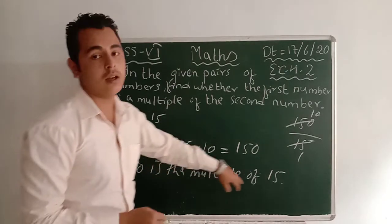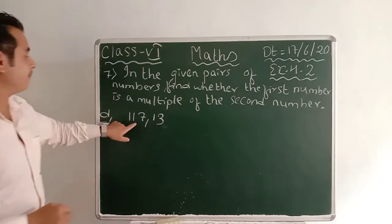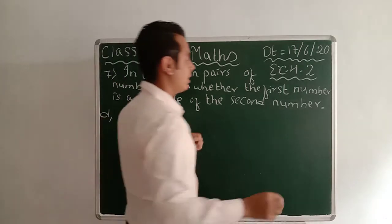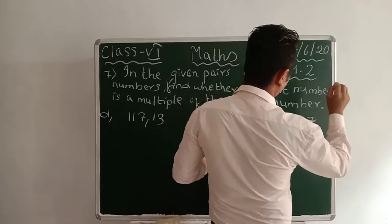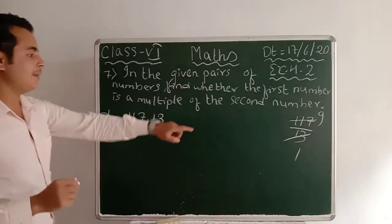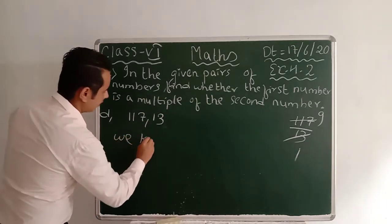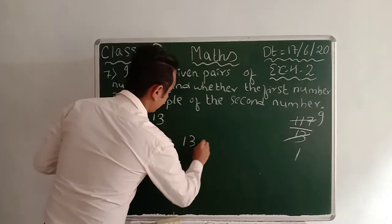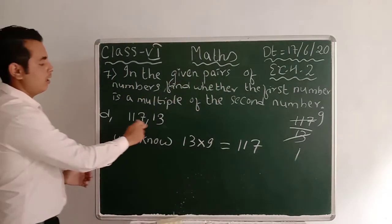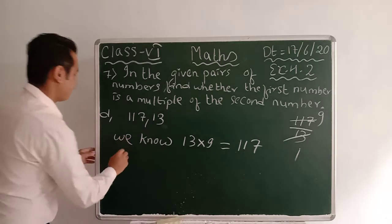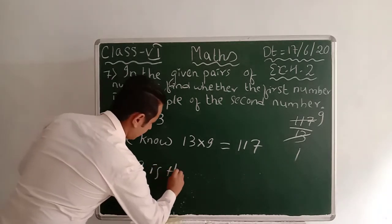Question d: 117 and 13. When you divide 117 by 13 you get 9, meaning 13 × 9 = 117. So we write: we know 13 × 9 = 117, therefore 117 is the multiple of 13.